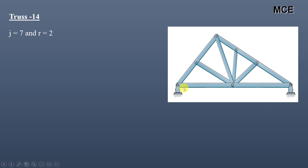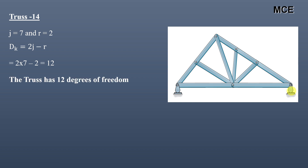For truss fourteen, this truss has a total of seven joints and two support reactions — one at each roller support. The value of dk for this truss is 12, meaning this truss has 12 degrees of freedom.